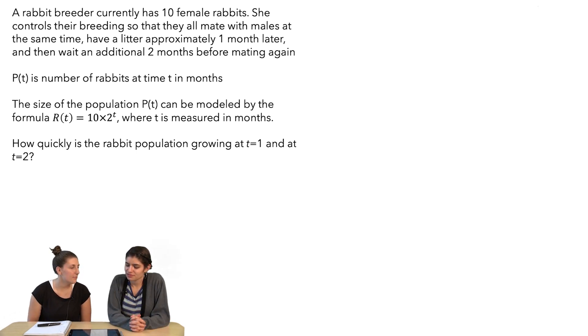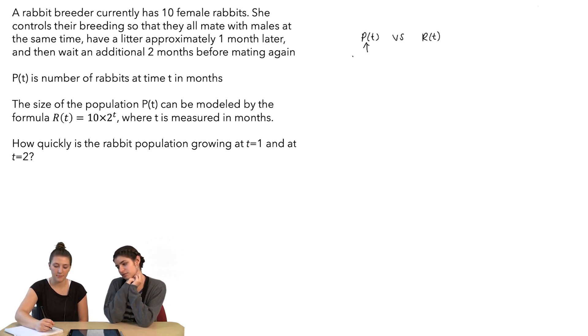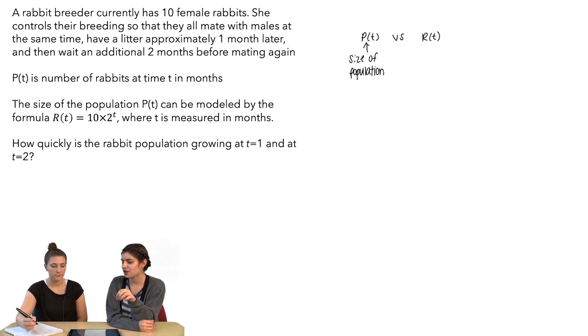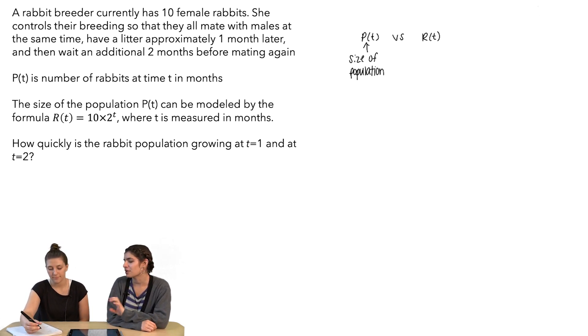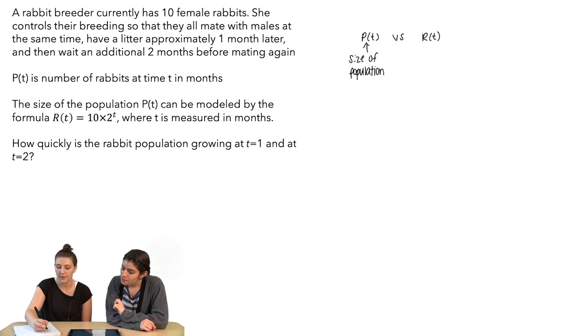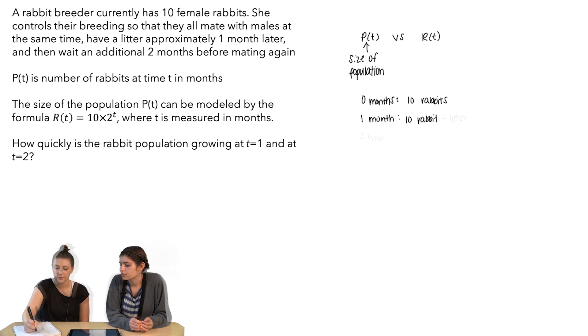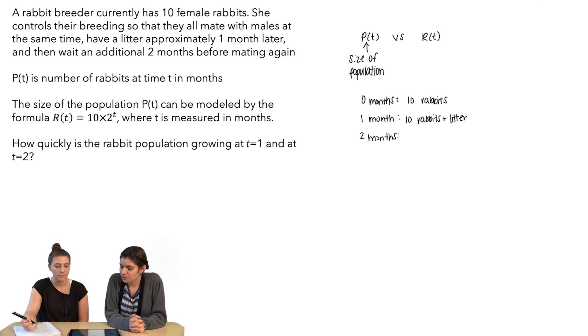So what's the difference between P(t) and R(t)? I think P(t) is pretty straightforward, like that's the size of the population. I feel like I need a chart of when babies are being born because the one month, two month break is kind of throwing me off. That's a good idea. So at zero months, there are 10 rabbits. At two months, they're not doing anything, so it's just whatever one month was.